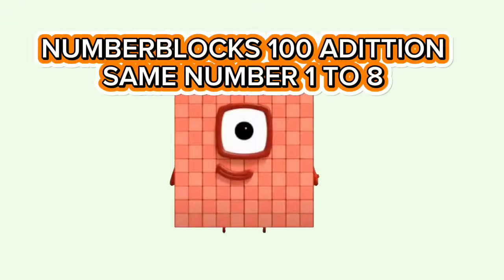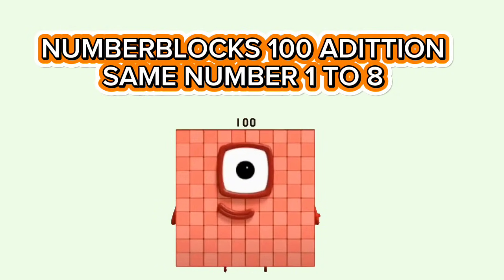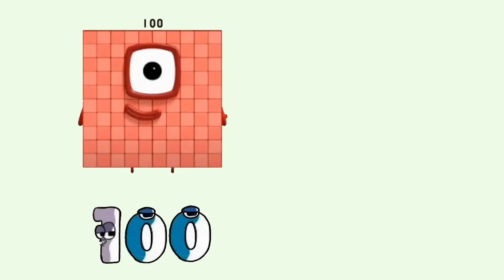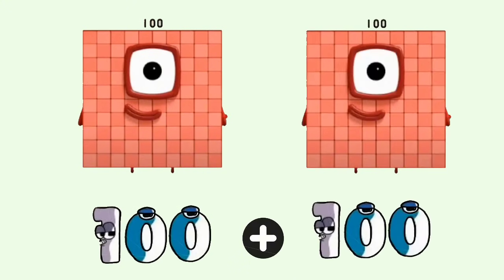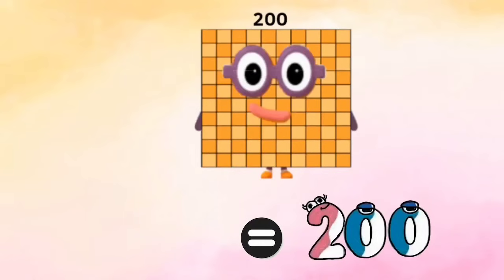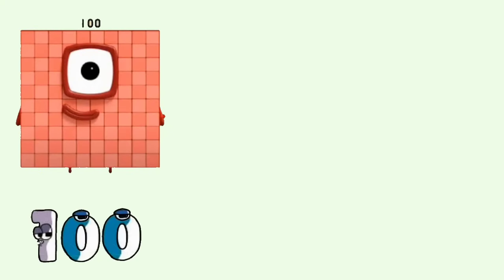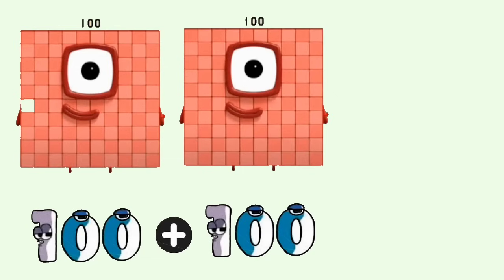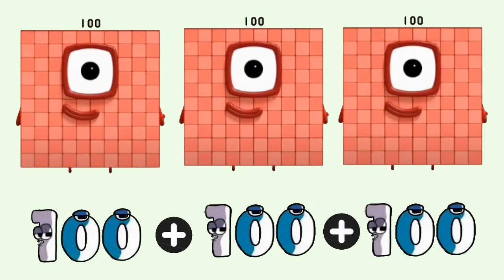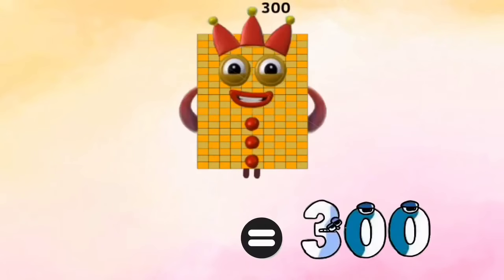Number blocks: 100 addition, same number 1 to 8. 100 plus 100 equals 200. 100 plus 100 plus 100 equals 300.